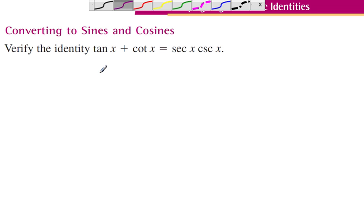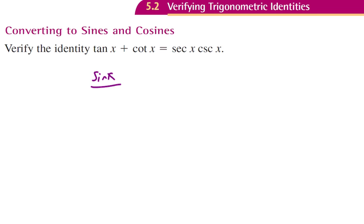So tangent from our identity is sine of x over cosine of x. And we can rewrite cotangent as cosine of x over sine of x.